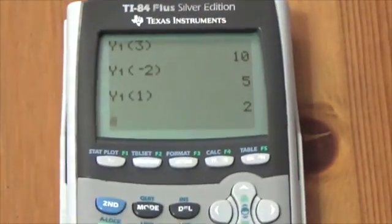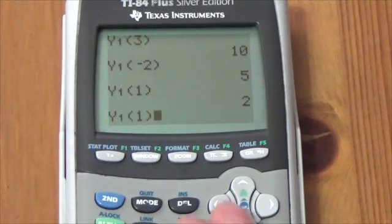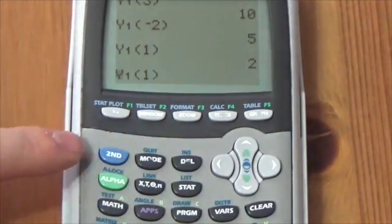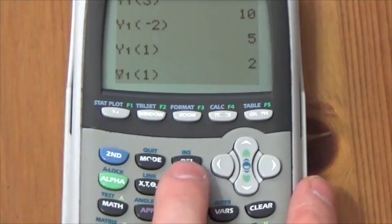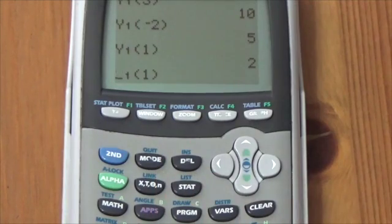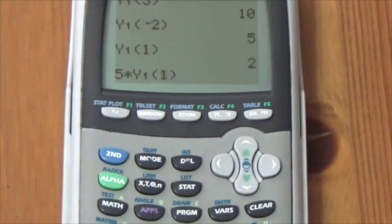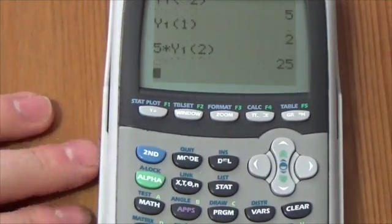So on my calculator, I'm going to see if I can get those same results here. I'm going to pull up that function again, just using second enter. To put a 5 in front, I'm going to use the insert, second delete, so the INS above there. And I'm going to put a 5 times there. So now it's 5 times my function. And instead of that 1 in there, I'm going to put that 2. Now this should be 25. And there it is.